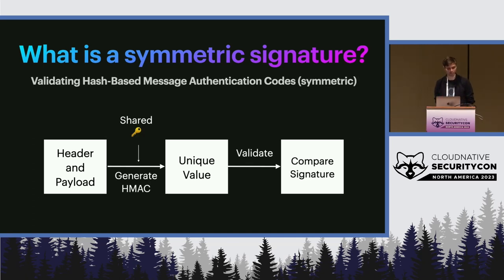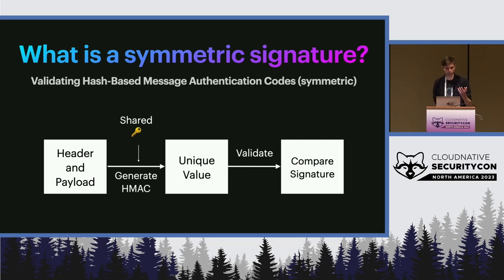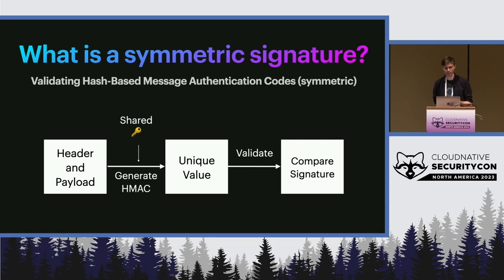The party receiving the token follows a similar process: they take the header and payload values and use the shared secret key, which they've established beforehand, to find the unique value and compare it to the signature sent in. Since these signatures match, they know the token is valid and can proceed safely. The downside of this symmetric signing approach is that establishing that shared secret key is less secure — you don't know who all has access to it, and since the validating party has the same secret key, they could also generate tokens that would be seen as valid.